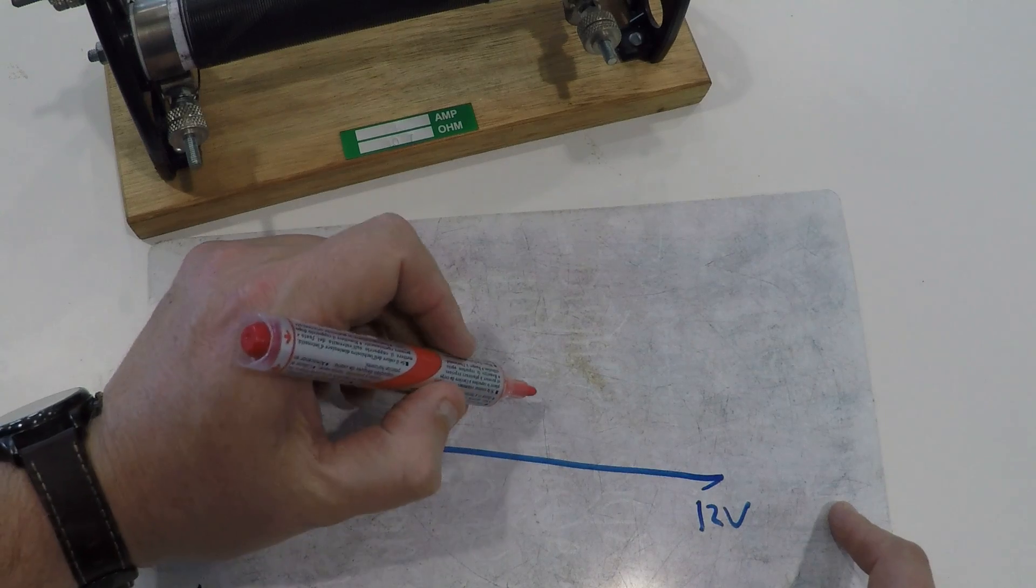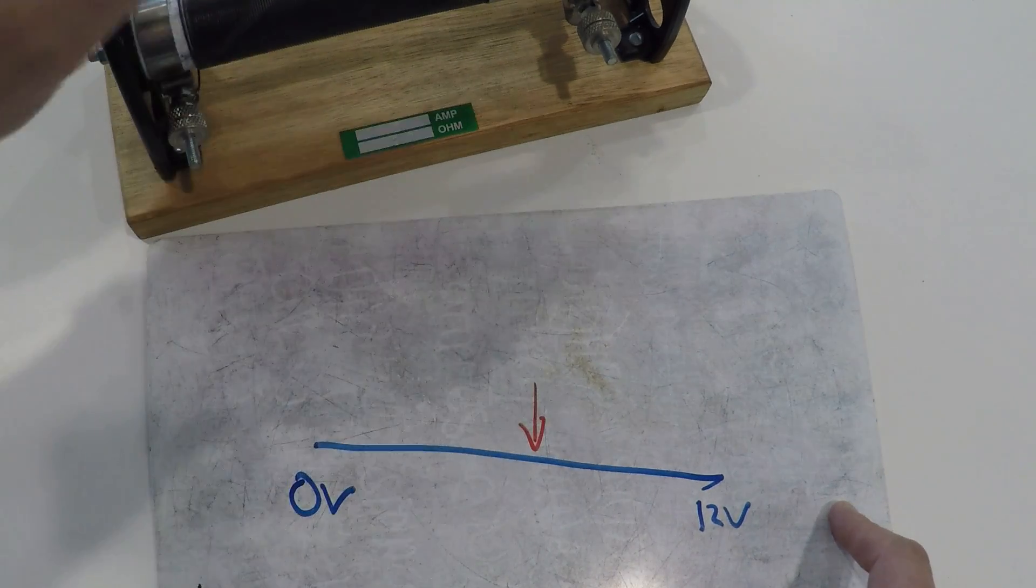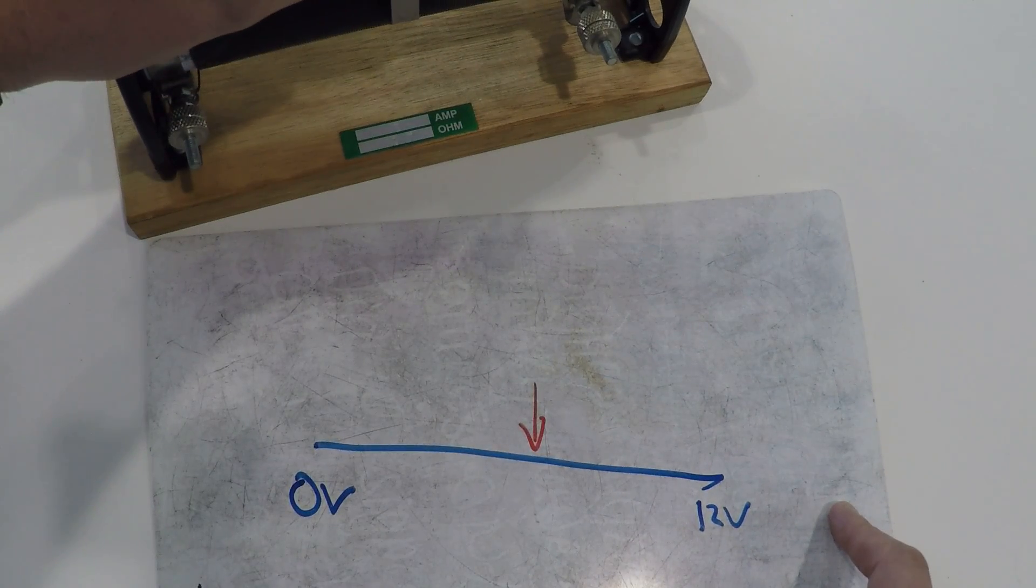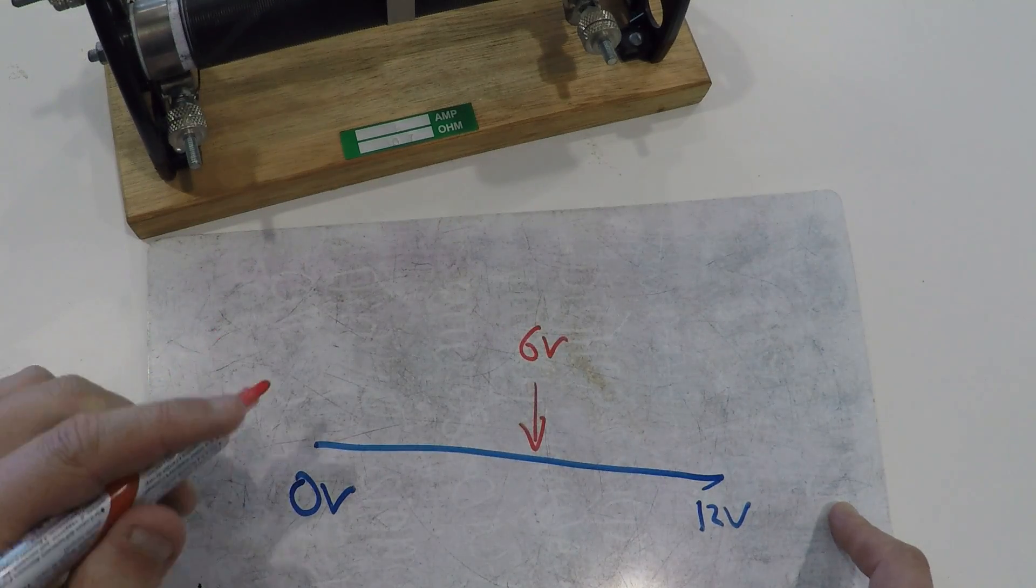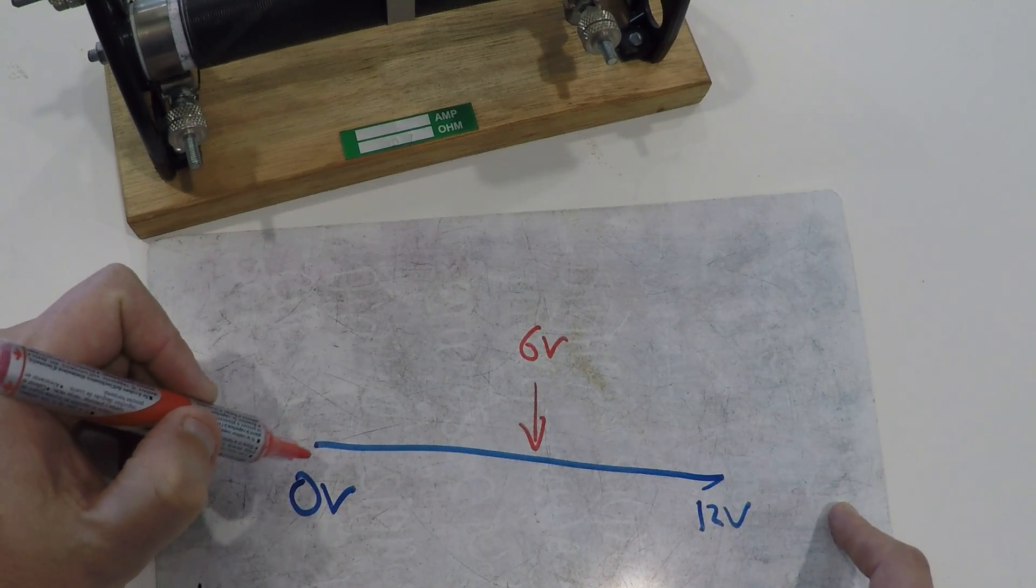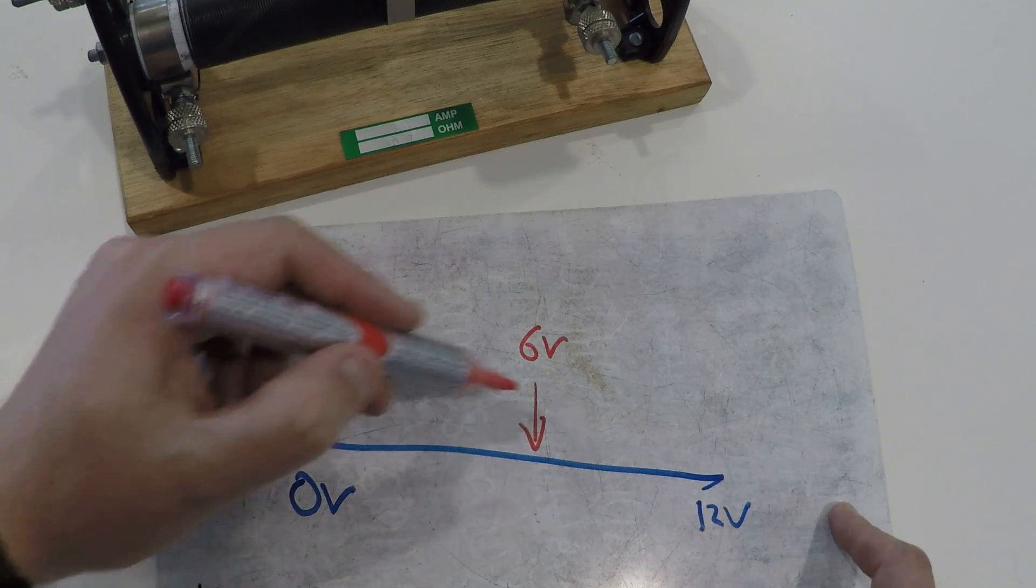So maybe if I put it in the middle, my little slider here, if I moved it to the middle here, well I could get a potential difference between here and here of six volts, or between here and here would also be six volts.